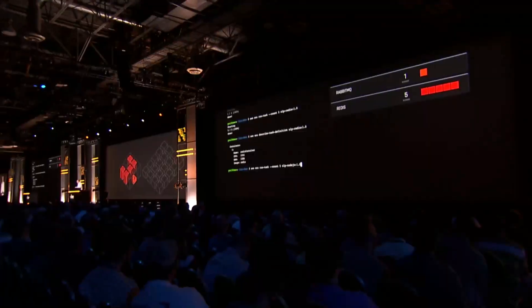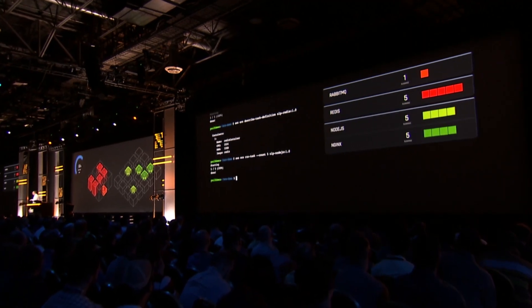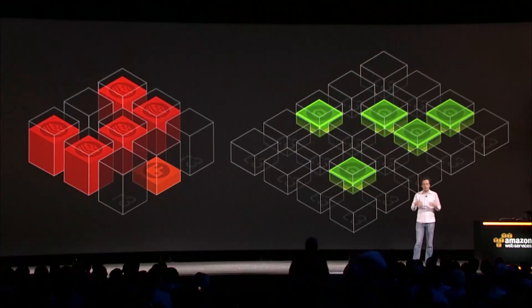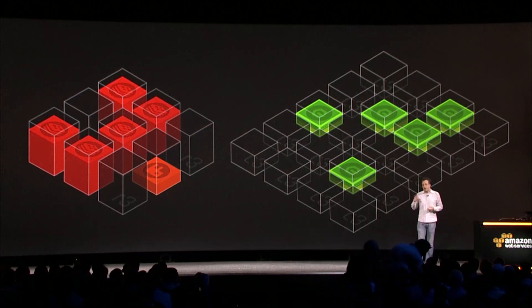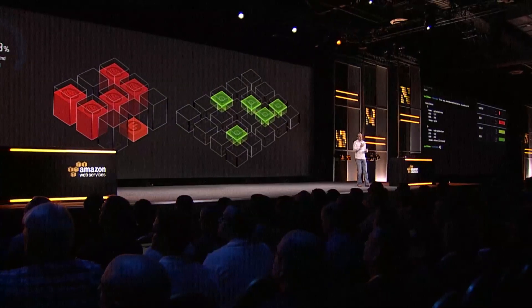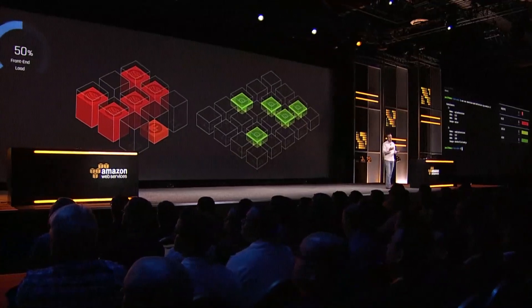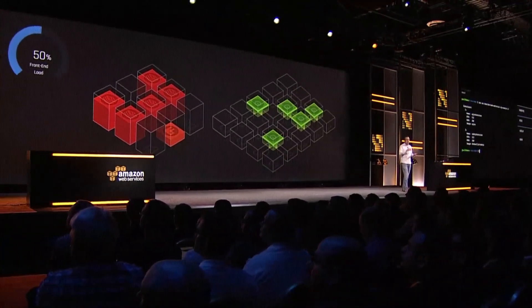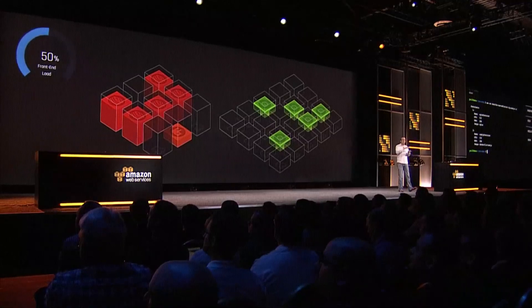The next thing we're going to deploy is the front-end components of our application. We'll deploy a few of them and see them get deployed into the cluster in a matter of seconds. These components actually consist of two containers. I've told the service not only the CPU and RAM needed for the NGINX and Node.js components, but also that they are two separate Docker images that need to be deployed together — so the service takes care of placing them in the right place at the right time.